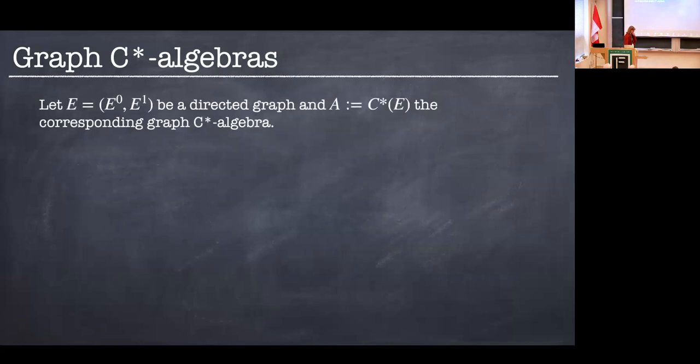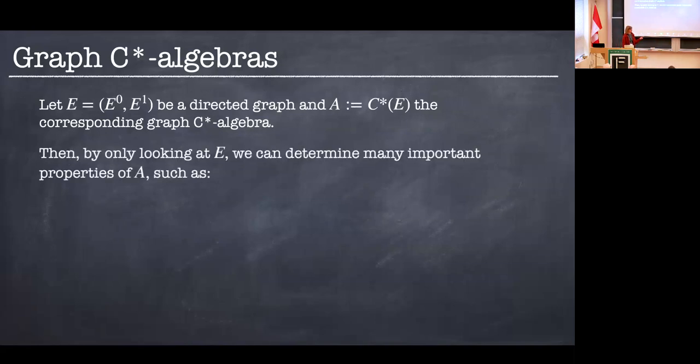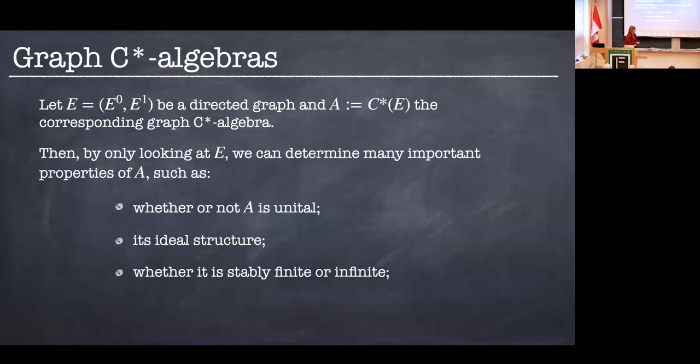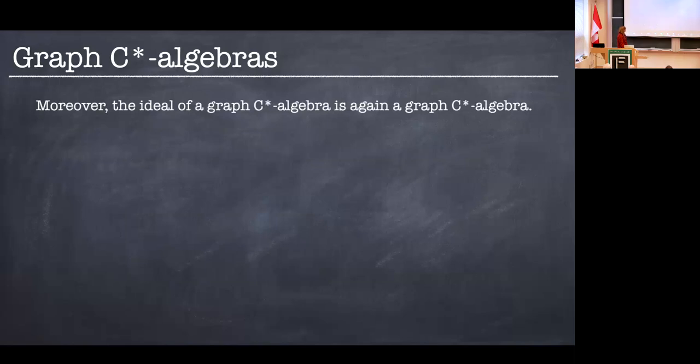Okay, so why would we want to look at graph C-Star algebras? Why would we want to take something like a quantum flag manifold, which I will explain what that is in a moment, and try to find a graph C-Star algebra model? Well, graph C-Star algebras are very well understood. So simply by looking at the graph itself, we can tell a lot about the structure of the actual C-Star algebra. So for example, you can immediately tell if it's unital or not. It's unital if and only if there are finitely many vertices. One can read off its ideal structure. You can tell whether it's, for example, stably finite or infinite, and this might not mean a lot to the NCG crowd, but some of the C-Star algebra people will know what this means. And you can even calculate its K-theory, which is very nice, because anyone who has tried to calculate K-theory will know that it can sometimes be a bit of a pain.